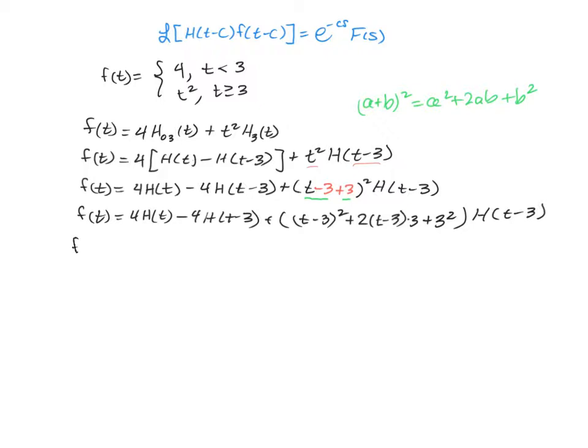All right, so continuing along, we're going to go in now and start multiplying this out. So we're going to have 4 times h(t) minus 3.